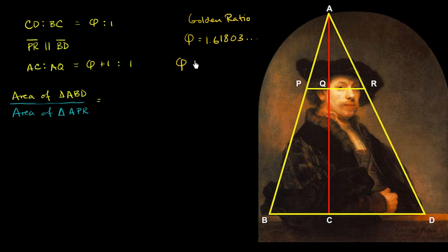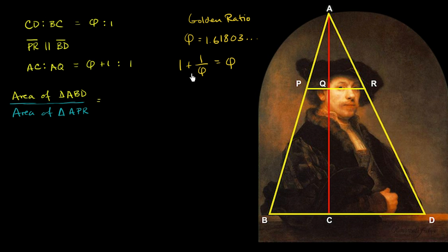If you were to start with 1 and add to that 1 over phi, that gives you phi. So that's kind of a neat thing. Now, if you were to multiply both sides of that equation by phi, you get that if you start with phi and add 1, you get phi squared. So it's a number where you add 1 and you get its square.